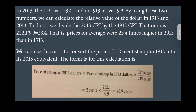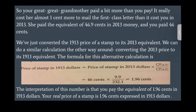We can use this ratio to convert the price of a 2 cent stamp in 1913 into its 2013 equivalent. The formula is: price of stamp in 2013 dollars equals price of stamp in 1913 dollars times CPI in 2013 over CPI in 1913, which equals 2 cents times 232.1 over 9.9, equals 46.9 cents. So your great-great-grandmother paid a bit more than you paid — almost 1 cent more to mail a first class letter. She paid the equivalent of 46.9 cents in 2013 money, and you paid 46 cents.